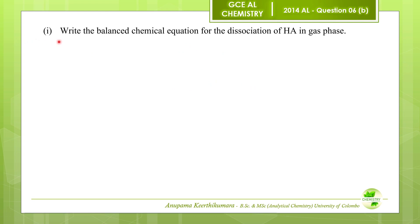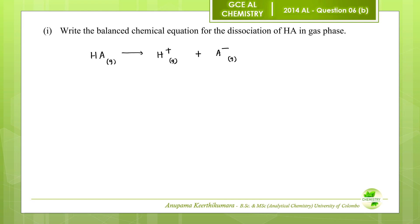Question number one: write the balanced chemical equation for the dissociation of HA in the gas phase. HA in the gas phase dissociates into H plus ions in the gas phase and A minus ions in the gas phase. This is the answer for question number one.